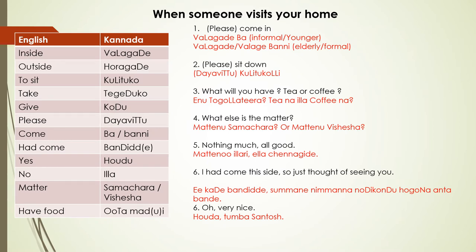First let me take you through the list of words and then we will go through the sentences that will make your task easier. The first word is, if you want to say 'inside' — inside is called Vala Gade. Pay attention to this capital L — Vala Gade.